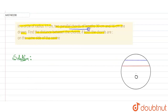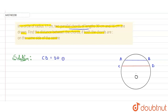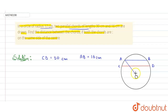There is a circle with two parallel chords. Consider one chord as AB and the other as CD. CD is 30 centimeters and AB is 16 centimeters. The radius of the circle is 17 centimeters. O is the center of the circle, and we draw radii to both chords.